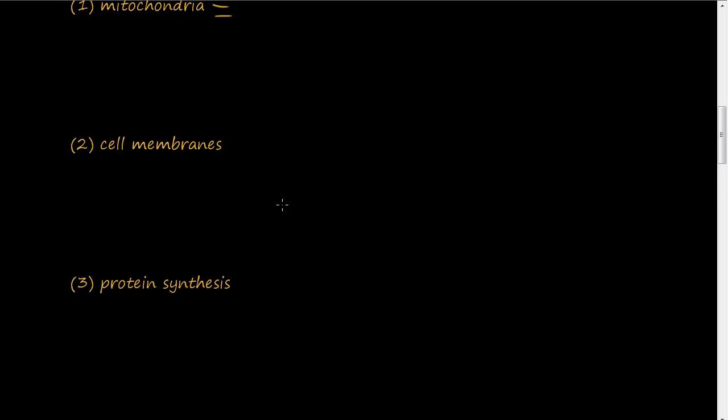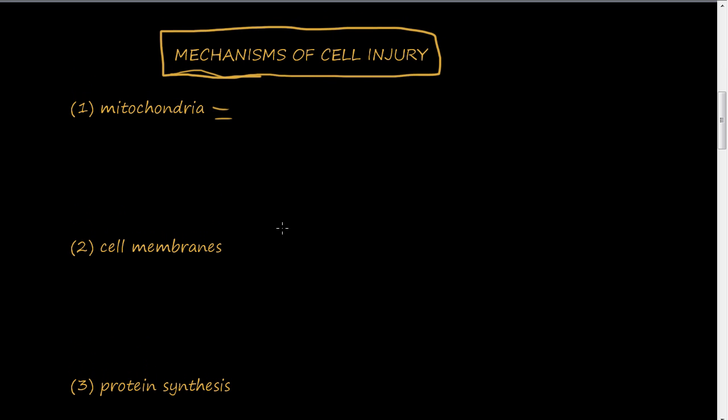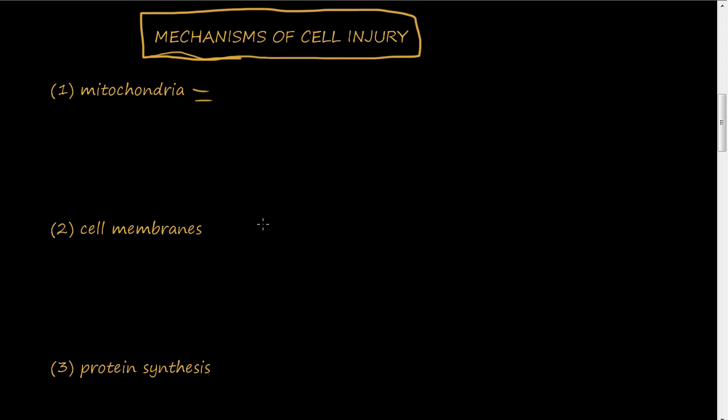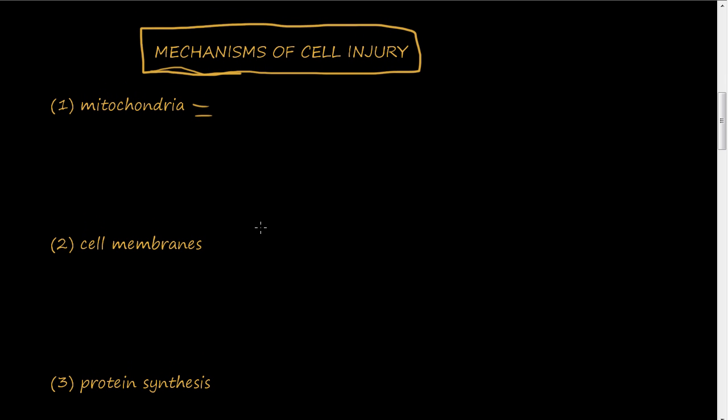Those are the five ways that we're going to talk about, the ways cells can become damaged in this video. But first we're going to talk about some of the pathways that ATP is produced. This is a very short intro, ATP intro.